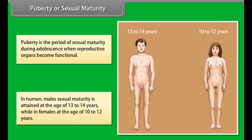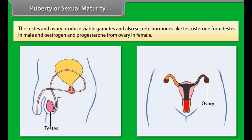In humans, male sexual maturity is attained at the age of 13 to 14 years, while in females at the age of 10 to 12 years. The testes and ovaries produce viable gametes and also secrete hormones like testosterone from testes in males, and estrogen and progesterone from ovaries in females.